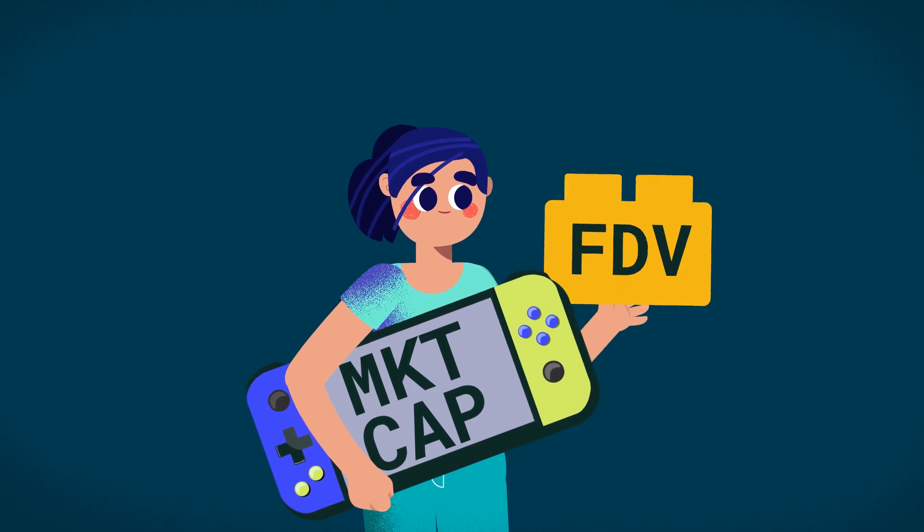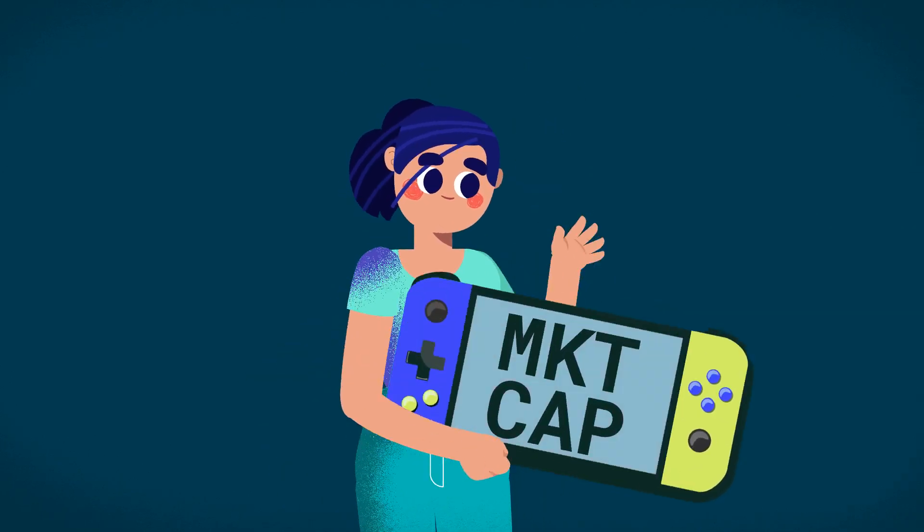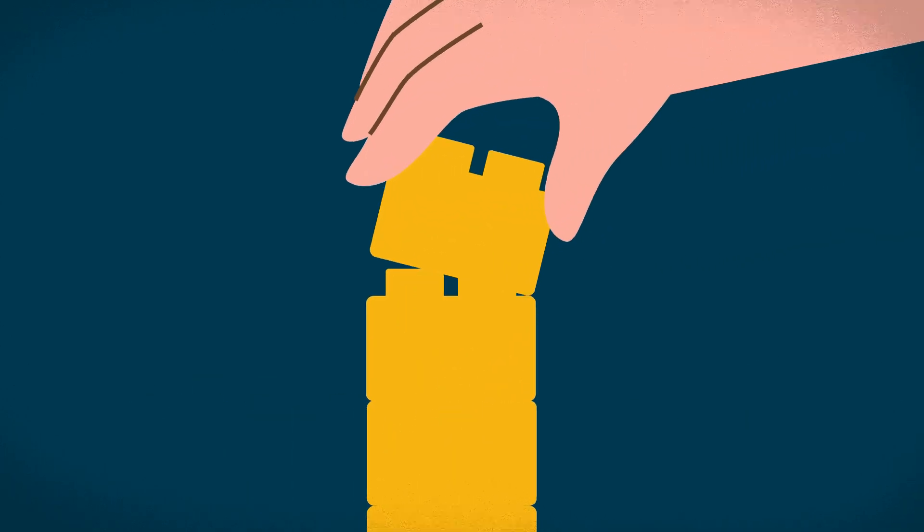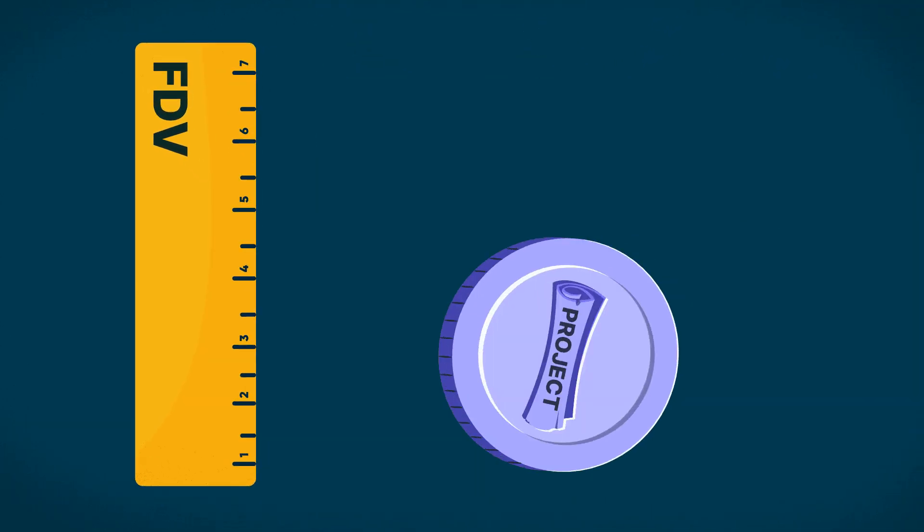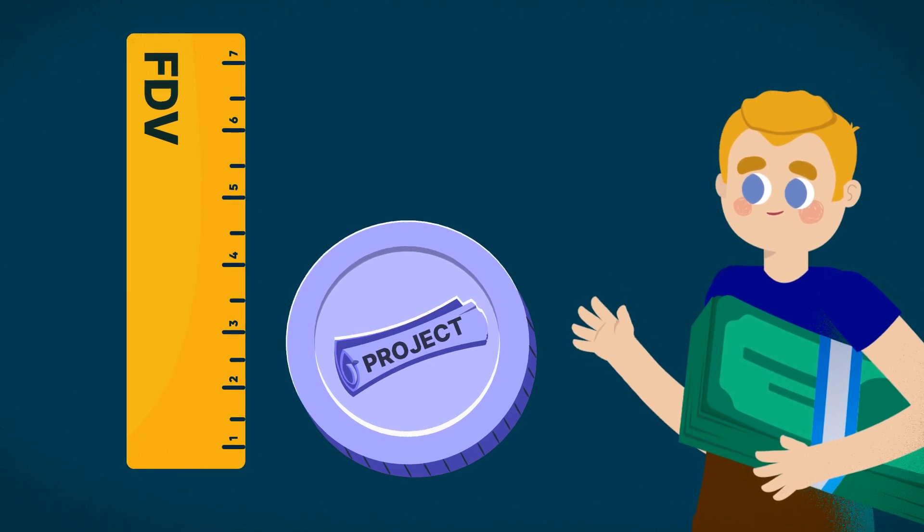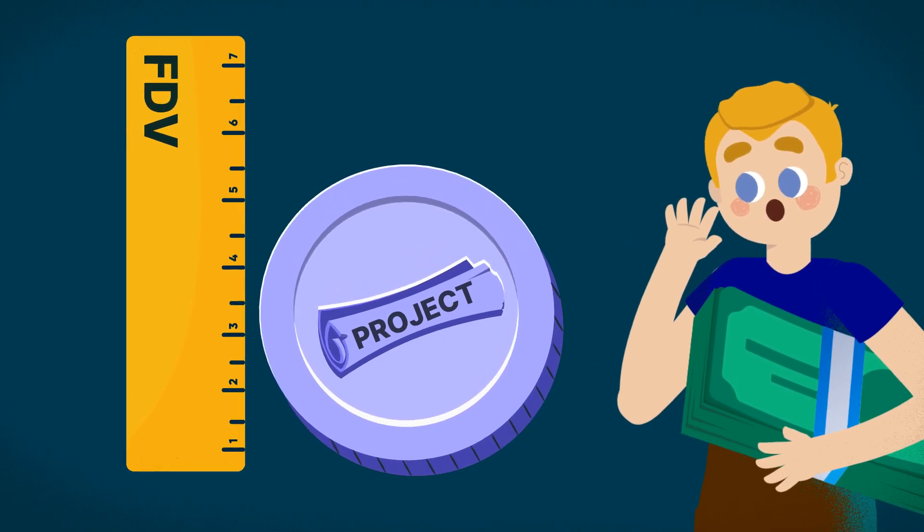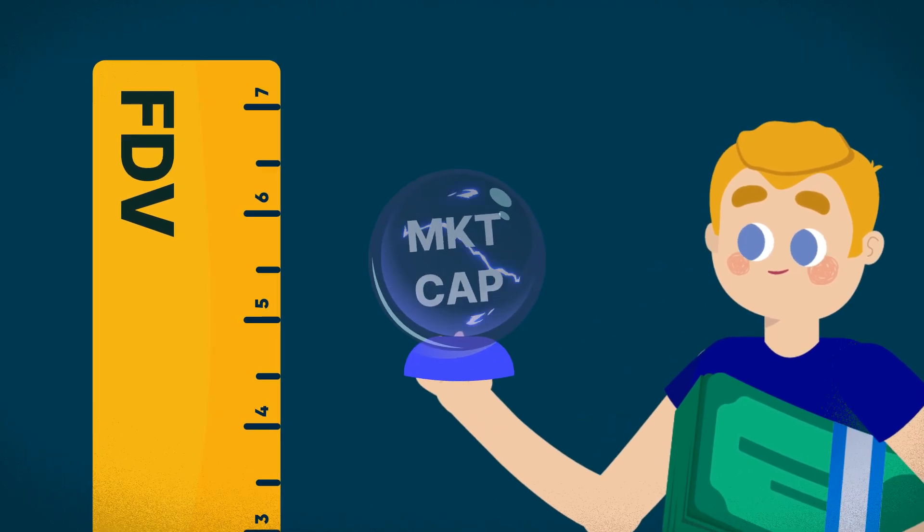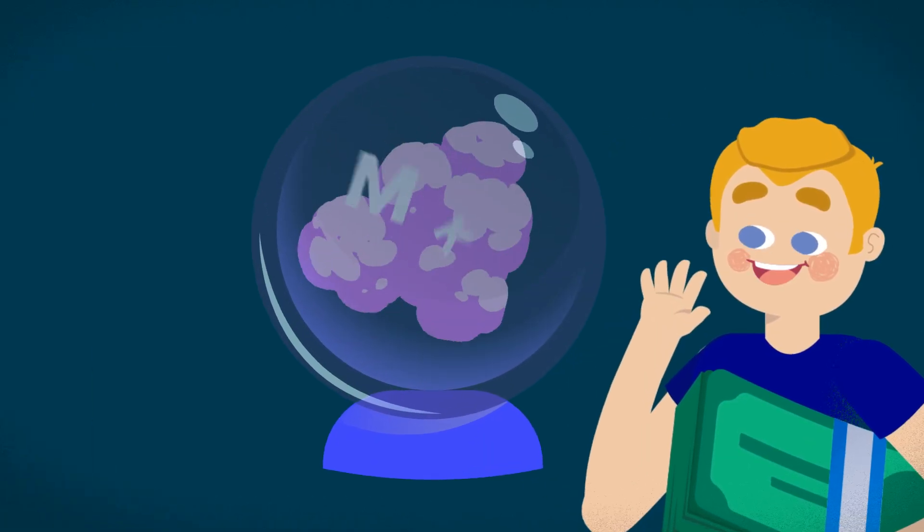While FDV is generally regarded as the lesser known sibling that no one really wants to play with, in the right hands it can be a powerful tool. FDV may be a good metric for long-term investors to judge whether a project's valuation is reasonable. And used together with Market Cap, it can let you take into account the impact of future supply changes.